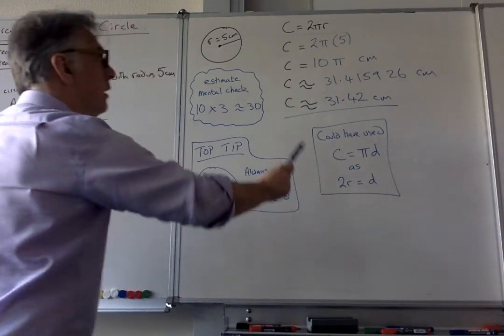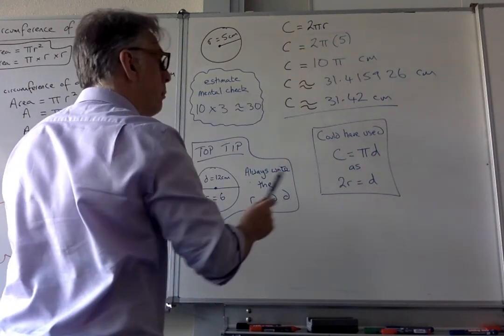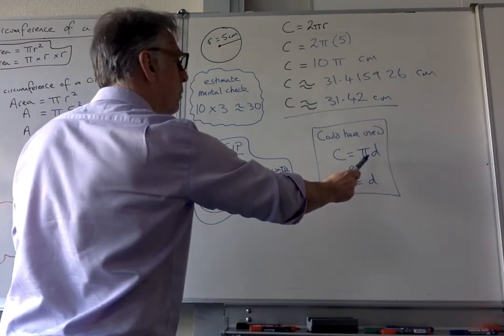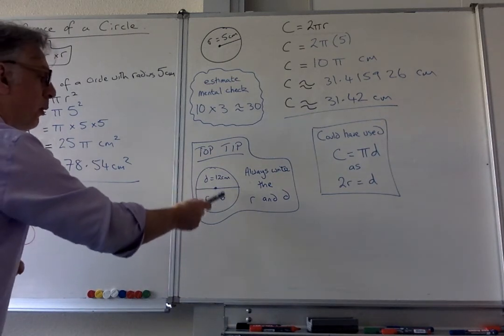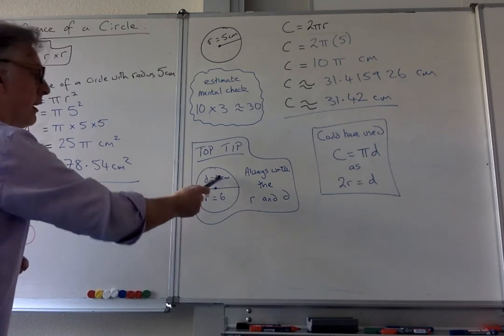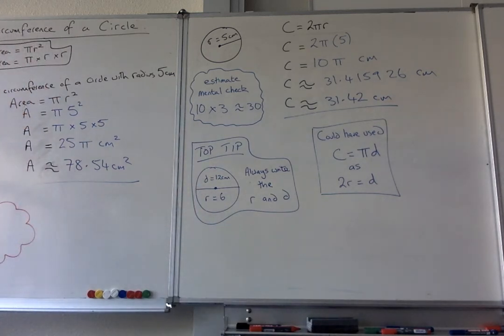Because 2R is equal to D, so that 2 and the R could be replaced by D. So that is another option that you could have used. But this is why I always tell people to do this, because they end up putting the diameter in for the radius, or the radius in for the diameter when they're using the formulas.